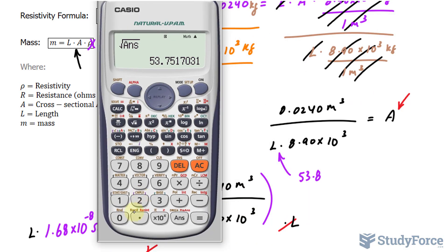Using our calculator, I have 0.0240 divided by 53.8 times 8.9 times 10 to the power of 3. And that's the area. I know it's really small, but that shouldn't scare you. Let me write that down.